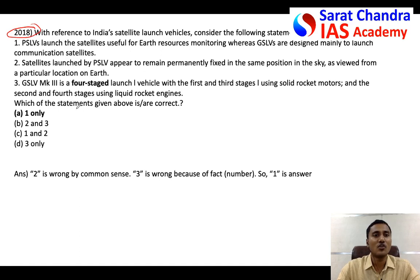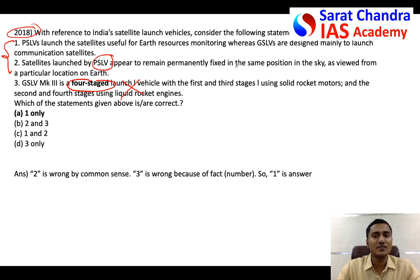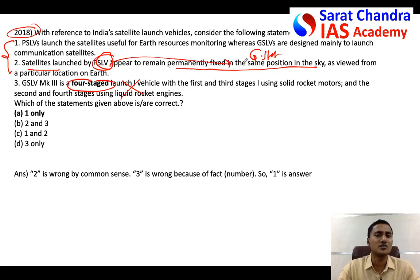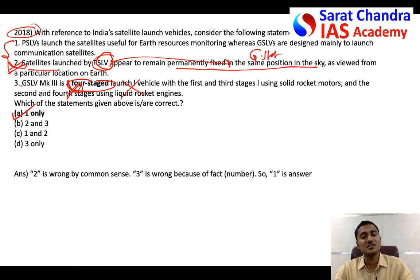Next question: facts are generally wrong, so statement three — which states 'four stage' as a fact — gets cancelled. Among statements one and two, use common sense. Statement two says satellites launched by PSLV appear to remain permanently fixed in the same position in the sky — meaning geostationary satellites. But PSLV launches different types of satellites; not all are geostationary. So by common sense, statement two is wrong, and the answer is statement one.